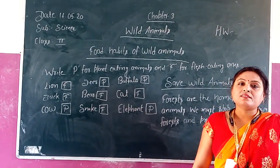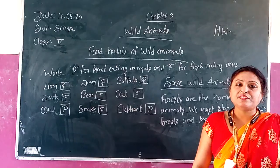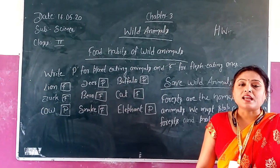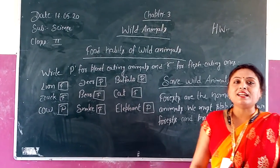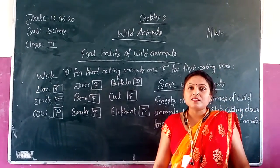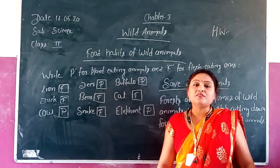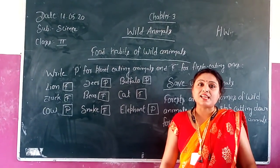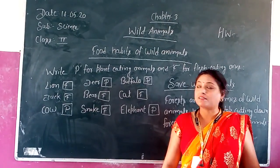Animals have different shapes and sizes. Elephant and lion are big animals, and fox and monkeys are small animals.